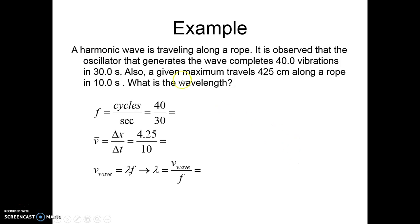So here we've got a little example that we're going to do. So a harmonic wave, that just means a whole numbered wave, so we don't have any partial waves in what we're looking at, is traveling along a rope. They observe that the oscillators, the thing that's producing the movement of the particles, the movement of the rope, generates a wave that's 40 vibrations in the course of 30 seconds. So 40 oscillations, 40 times up and down in 30 seconds. And we also know that the rope travels 425 centimeters in 10 seconds.